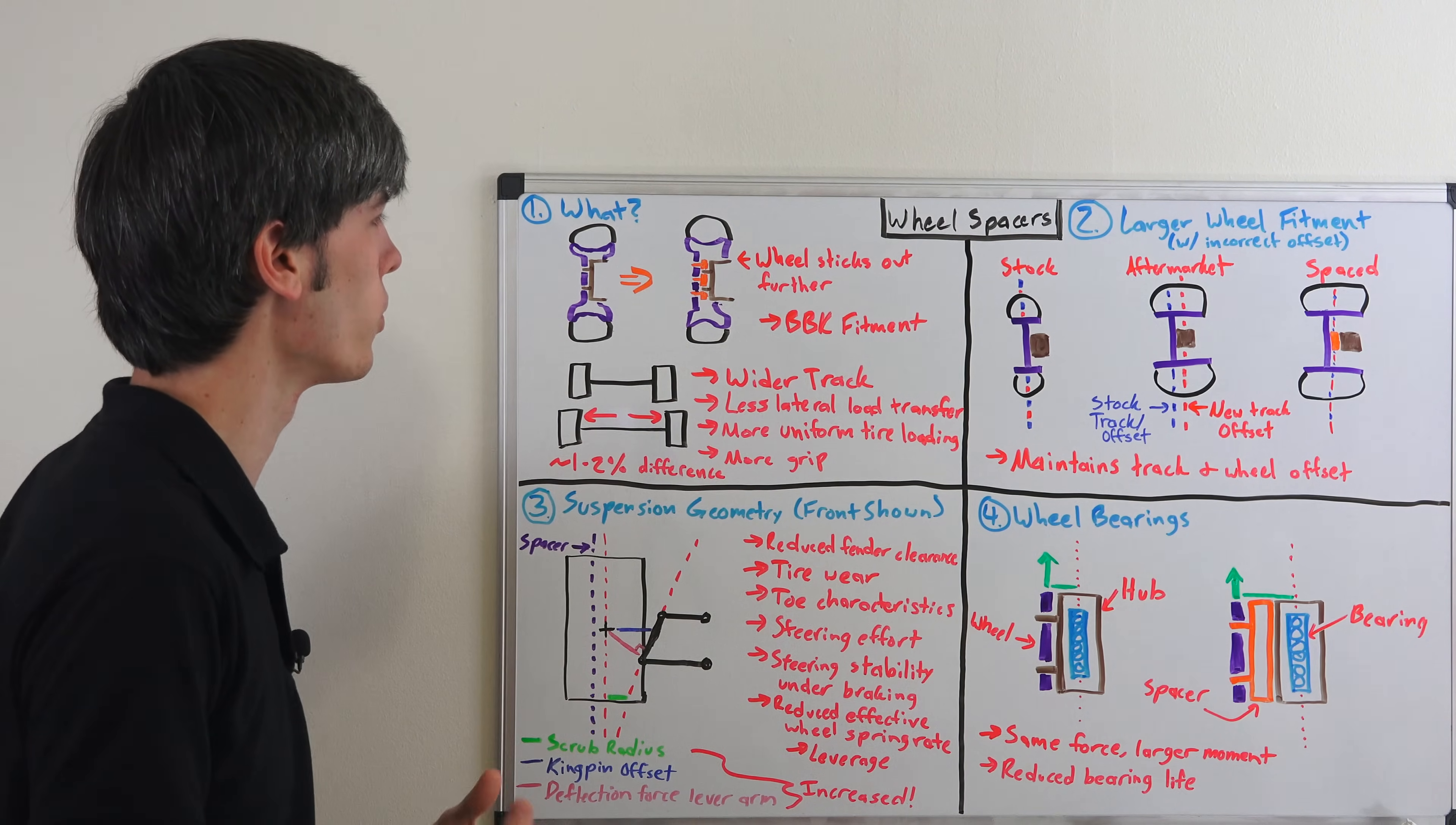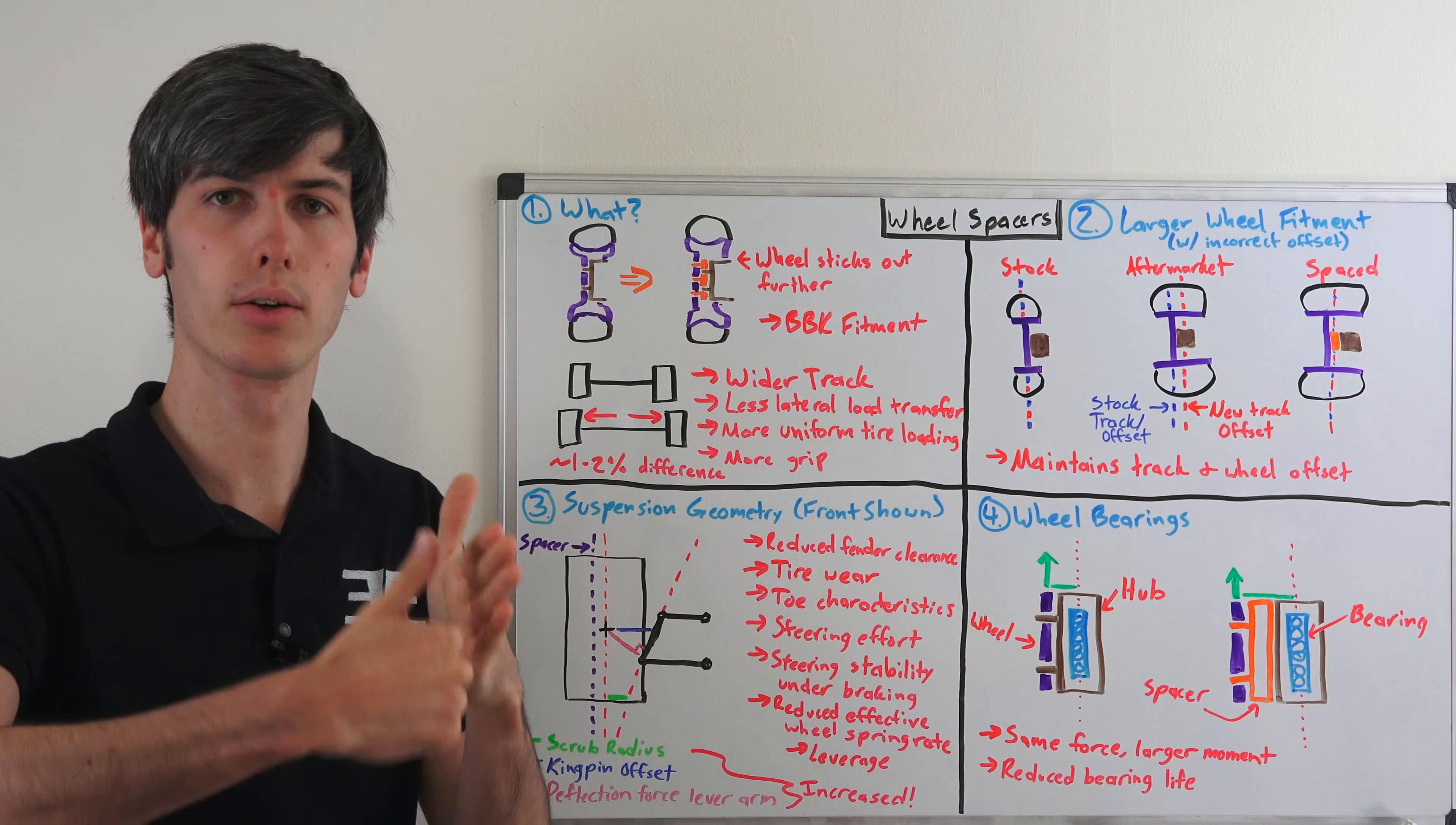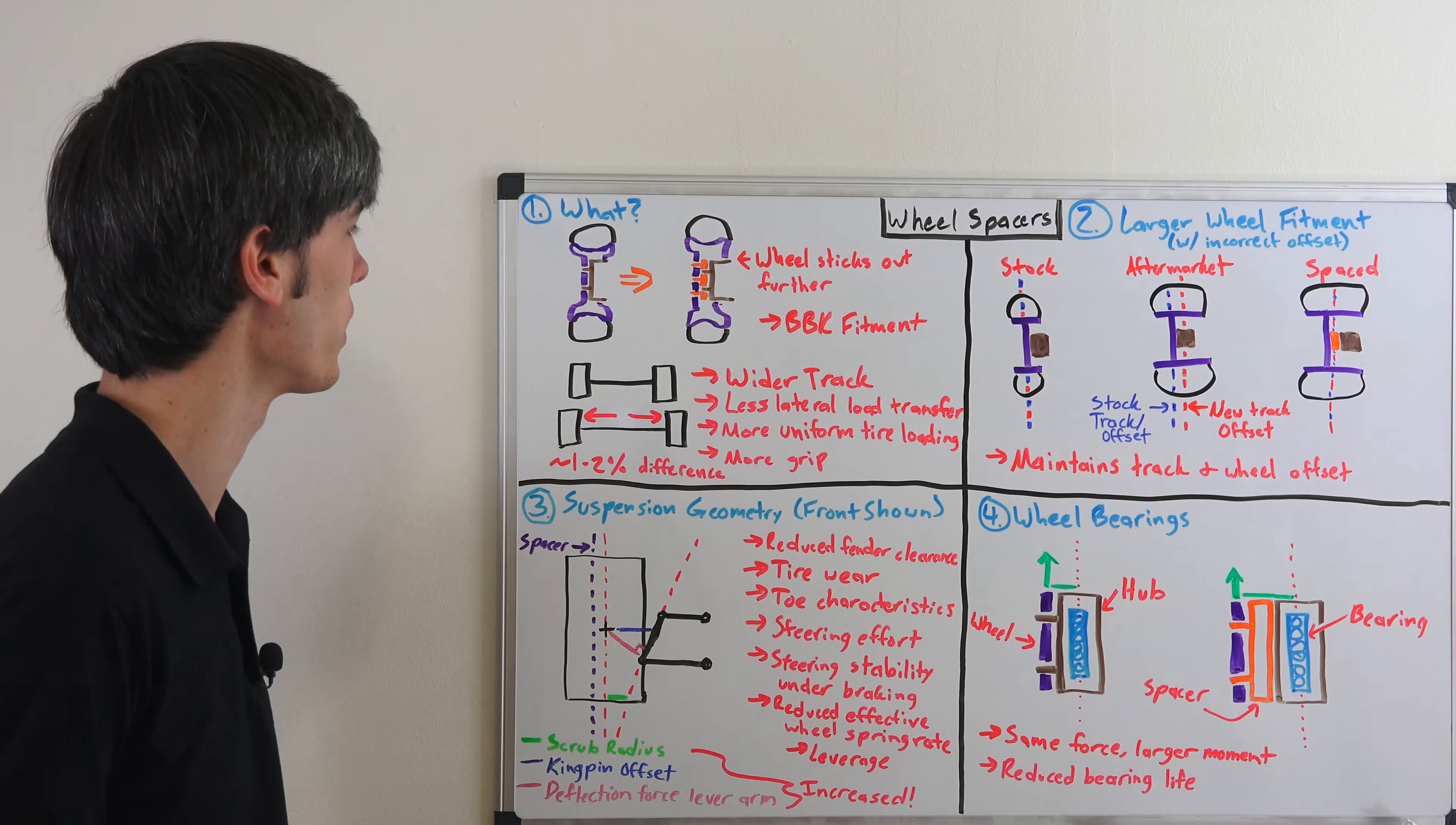So one of the reasons you might do this, let's say you're trying to fit a big brake kit and it doesn't quite fit with your current wheels. Well, you may be able to push them out and then not have any interference with the caliper and the wheel itself. So that may be one reason. You might want to opt for larger wheels in that instance with the same offset to do it. But that's one way you could handle that problem.